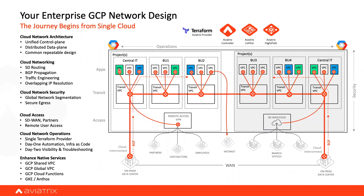For example, you have this green VPC here and the second one is there. They can talk to each other, but the blue might not want to talk — this could be dev. Depending on the policy or the profile you define, we can achieve your desired outcome.